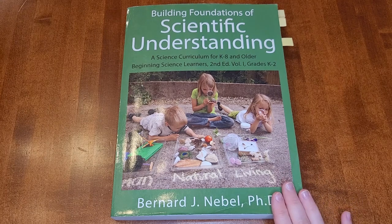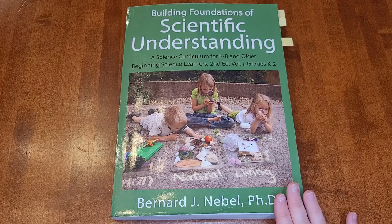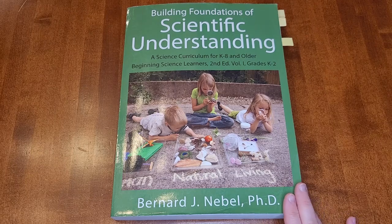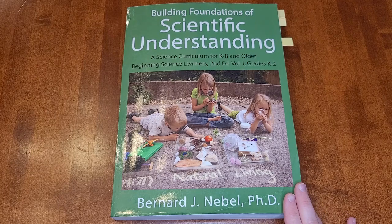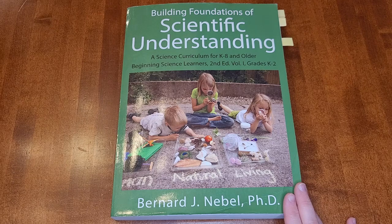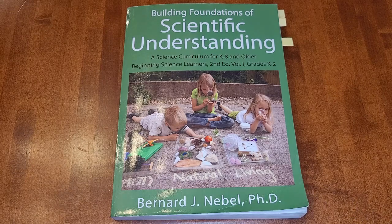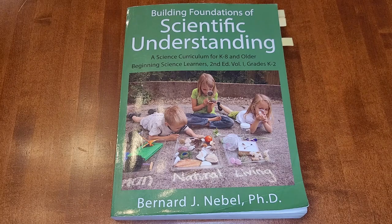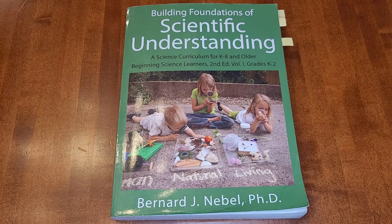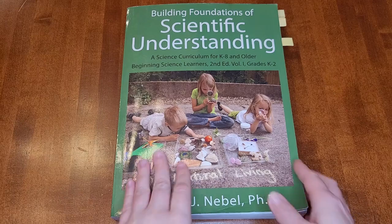We actually opted to condense this first volume into just two years, so we're doing it in first grade and second grade, instead of stretching it out over three years. And in the front of this book, he talks about those two different options. If you want to start in kindergarten, you're going to go through the very beginning lessons much more slowly. If you condense it to two years, you just go through them at a more normal pace.